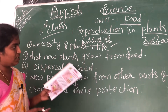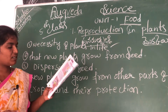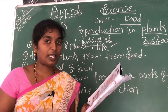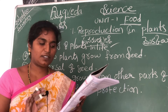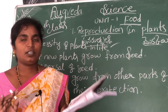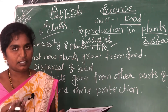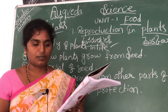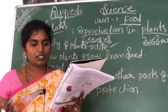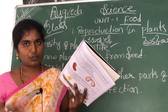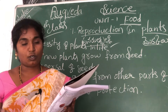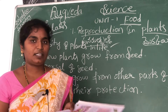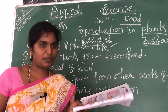Plants give us food — like rice, wheat, cereals, vegetables, fruits, sugar, pulses, and oils. These are all the food items we get from plants.